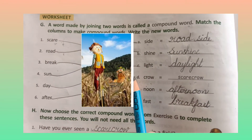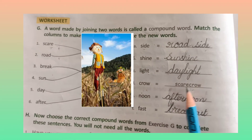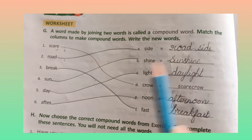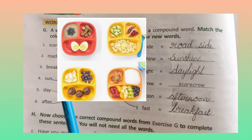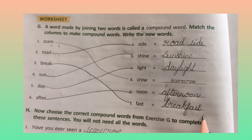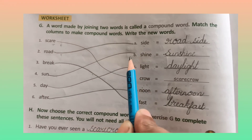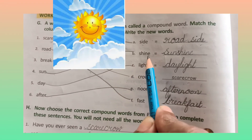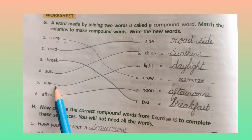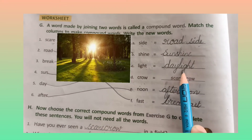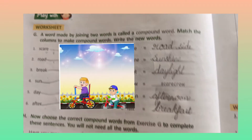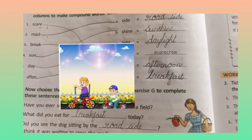Scare and crow makes scarecrow. Road and side makes roadside. Break and fast makes breakfast. Sun and shine makes sunshine. Day and light makes daylight. And the last one is afternoon. Very good children, you are exactly right!